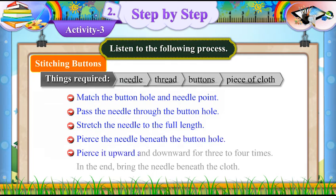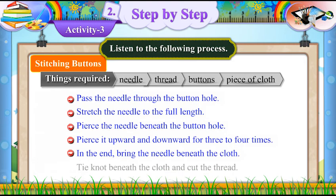Pierce it upward and downward for 3 to 4 times. In the end, bring the needle beneath the cloth. Tie a knot beneath the cloth and cut the thread.